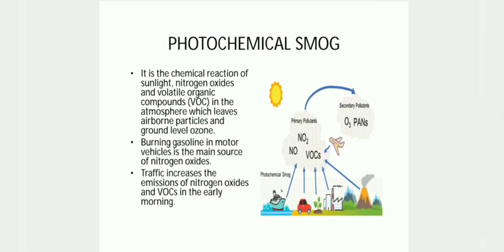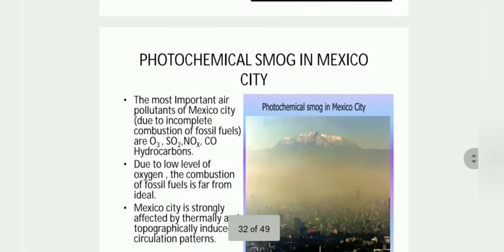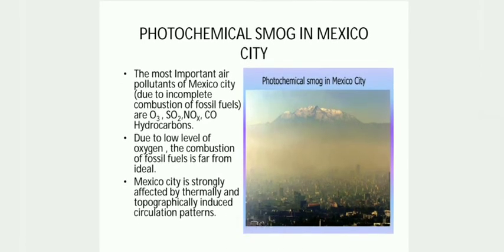Photochemical smog is the chemical reaction of sunlight, nitrogen oxides, and volatile organic compounds in the atmosphere, which leaves airborne particles and ground-level ozone. In Mexico City, trapping of industrial and vehicular pollution results in a smog problem. Low oxygen levels result in incomplete combustion of fossil fuels, which causes more air pollution and smog in Mexico City.